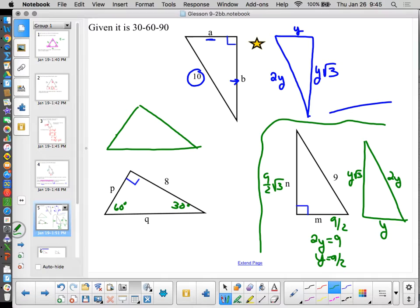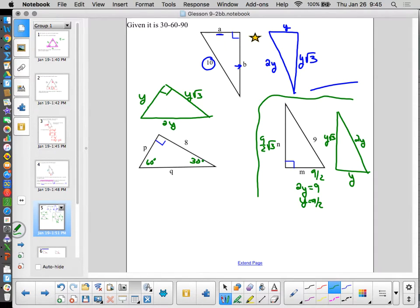All these are automatically 30-60-90 that we're working on right now. So we've got our short side, our long side, and our long leg. Short side, hypotenuse, long leg. This time we know the long leg is 8. Oh gosh, now I've got work to do. But I can do the algebra. It's the y root 3 side equals 8. To solve the algebra for y here, I'm going to have to divide both sides by the square root of 3.